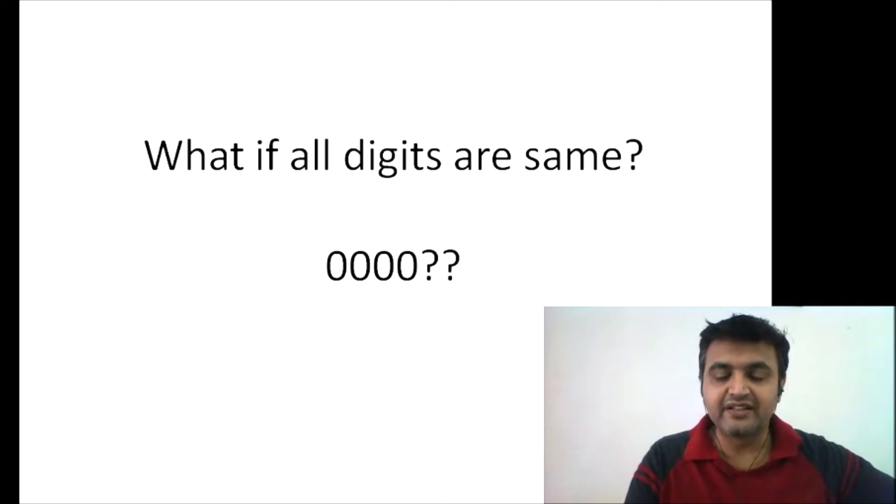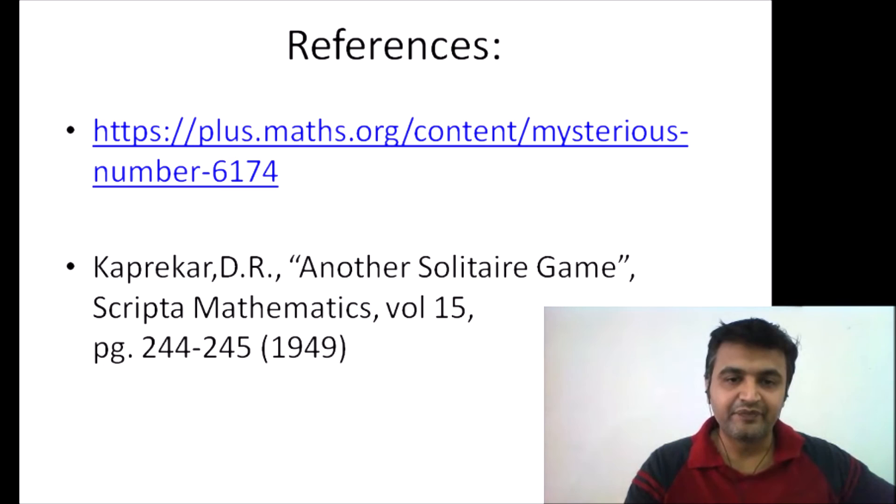That's the mystery behind 6174. Follow Kaprekar's routine and you arrive at 6174. When I learned about this, I tried to prove it, though I couldn't fully succeed. When I googled it, this plusmath.org article on mysterious number 6174 came up. This mathematician has written a very nice proof. If you're interested, go through it. If you have doubts about the proof, discuss with me in the comment section. This is also the paper by Kaprekar himself if you're interested.